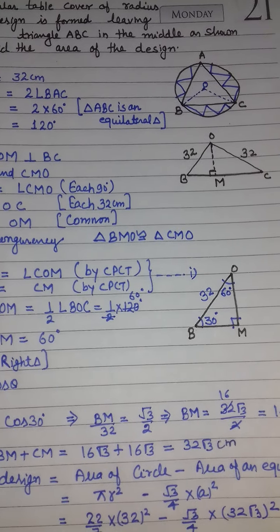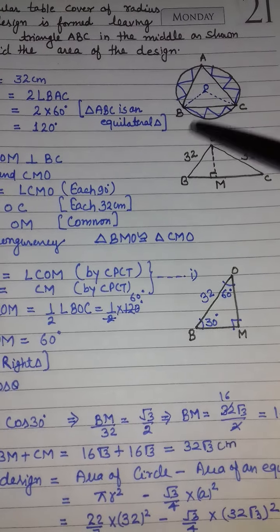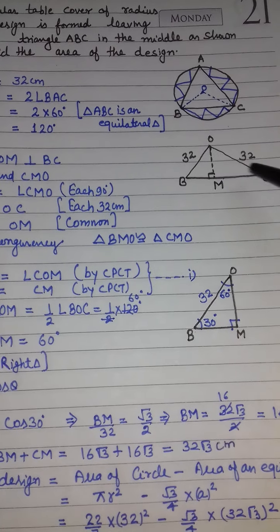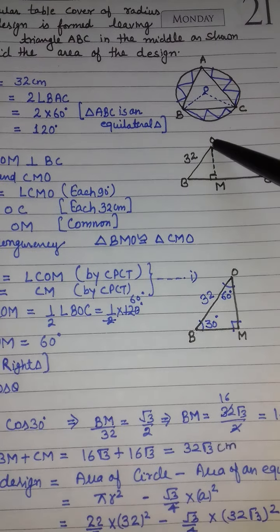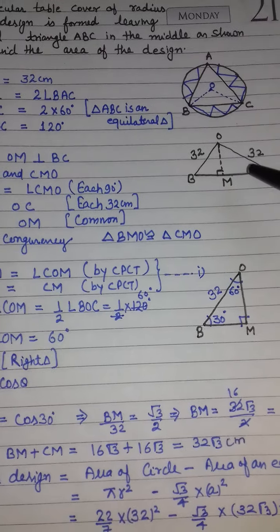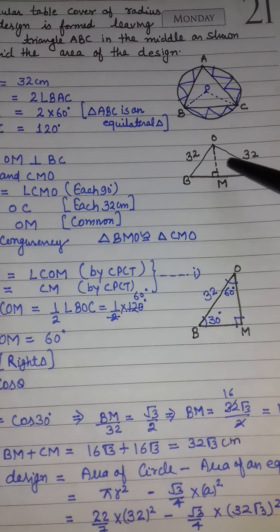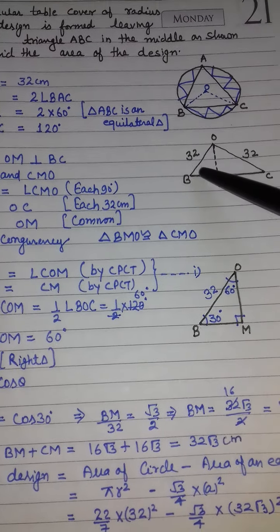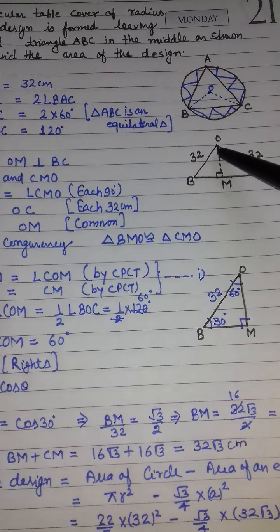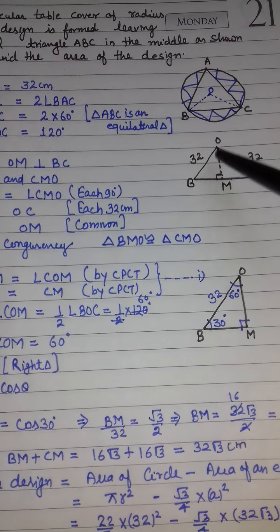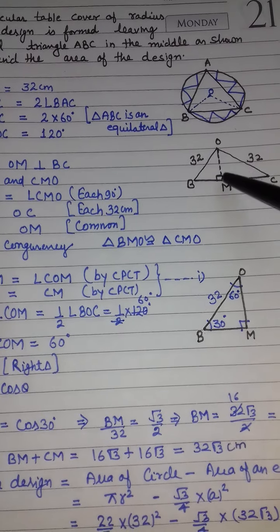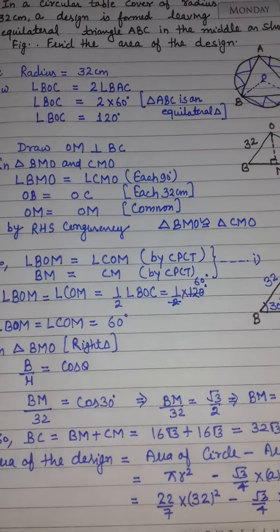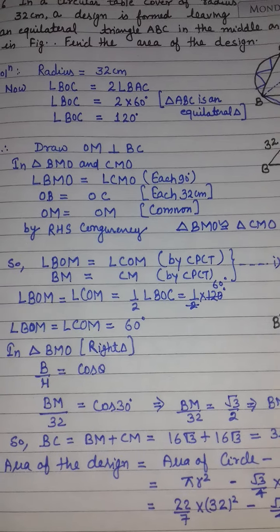Triangle की side find करने के लिए मैंने triangle BOC लिया और O से BC पर OM perpendicular डाला। वहाँ से दो triangles formed हुए। दोनों triangles को congruent prove करके यह angle उस angle के equal करूंगा, और BM को CM के equal कर दूंगा by CPCT।